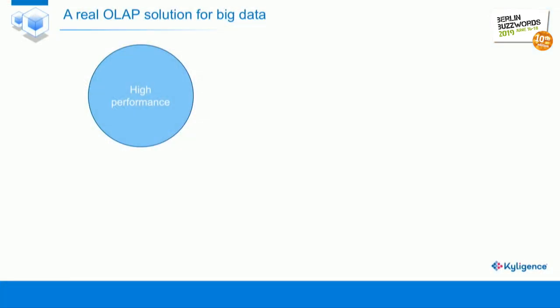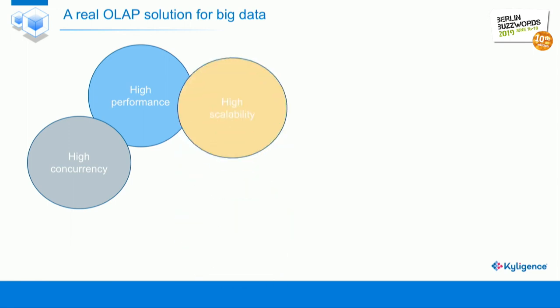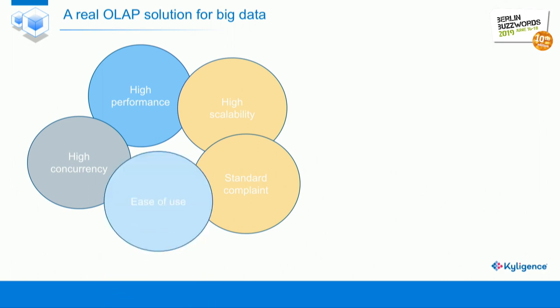So we think: what is a reliable solution for big data? Firstly, it should be high performance and able to serve multiple concurrent users, with good scalability so you don't need to always move your data. It needs to be standards-compliant so you can integrate it with other systems. And finally, the OLAP solution needs to be easy to use.